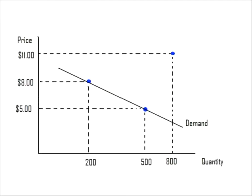Suppose you find another data point for Friday that doesn't seem to make any sense. There was a time when the price was $11, but a whopping 800 tickets were sold. That doesn't seem to follow the law of demand — how could a higher price have caused more ticket sales?